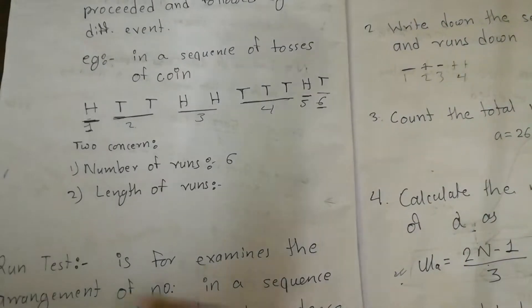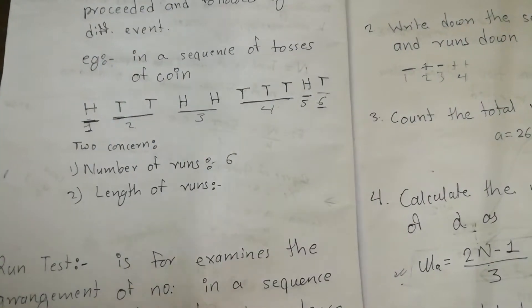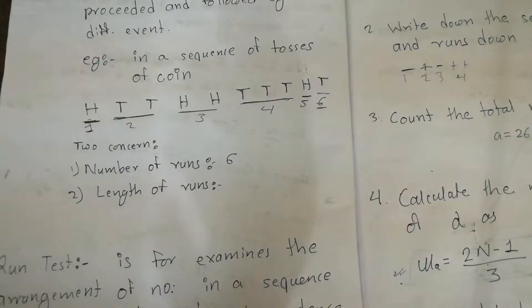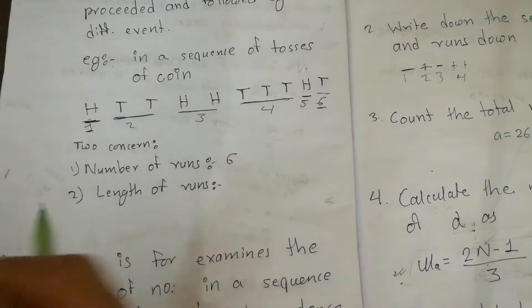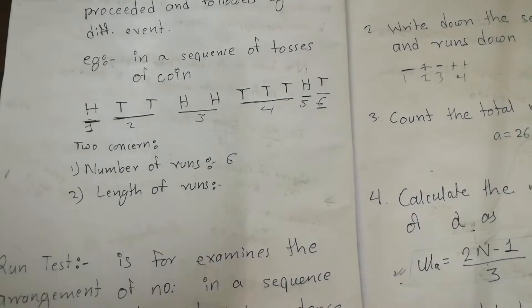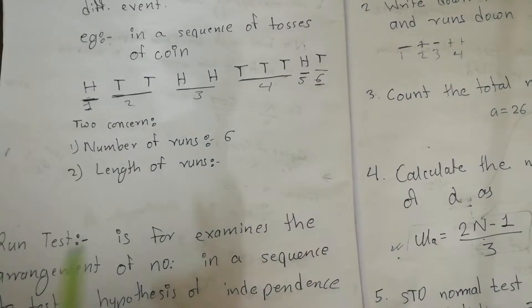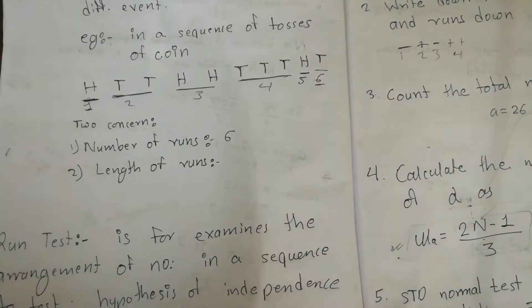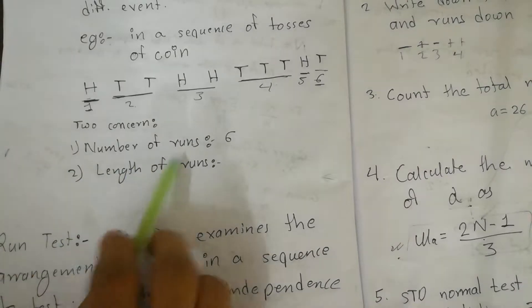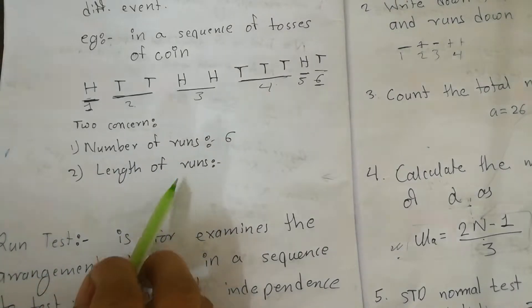For example, consider a sequence of tosses of a coin. It's not fixed which outcome comes — whether tail or head — but it is fixed that head or tail will come. A run has two main features: the number of runs and the length of the runs.